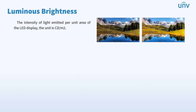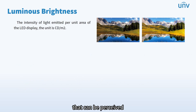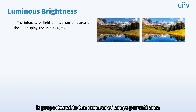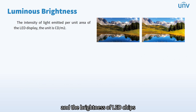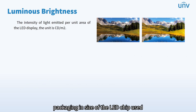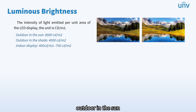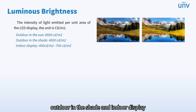The next is brightness. Brightness is the intensity of light coming from a screen that can be perceived. Brightness is proportional to the number of lamps per unit area and the brightness of LED chips. When dot density is fixed, brightness of the LED display depends on the material, packaging, and size of the LED chip used. The larger the LED chip, the higher the brightness, and vice versa. Here we can see some brightness ranges of three common scenarios: outdoor in the sun, outdoor in the shade, and indoor display.